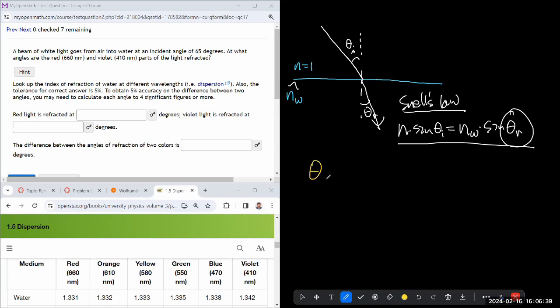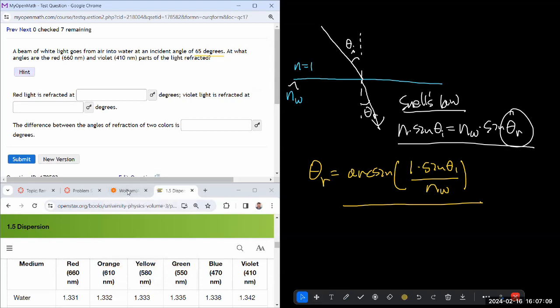So having done that algebra in my head, I get that it's arc sine of n, which is one. So one times the sine of theta one divided by index of refraction of water. So it's a matter of plugging numbers into this formula. So I think I'm given theta one, 65 degrees, and I can look up index of refraction there. So yeah, let's do that.